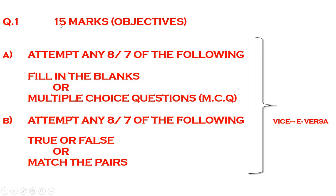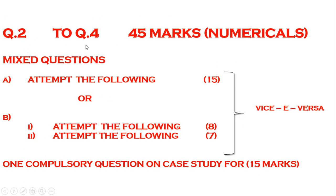Question number one is for 15 marks and will be divided into two parts: question 1A and question 1B. Question 1A will be 'attempt any 7 or 8 of the following' — there is a probable chance of getting multiple choice questions (MCQs) or fill in the blanks. Question 1B will again be 'attempt any 8 or 7 of the following' — it can be true or false or match the pairs, which was first time introduced in the syllabus. It can be vice versa as well.